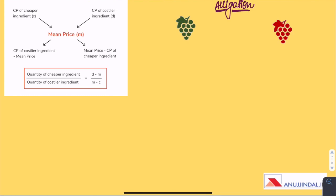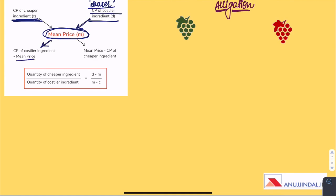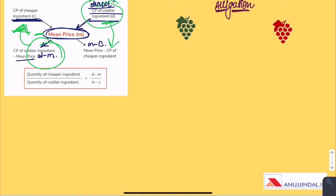Alligation is the rule that enables us to find the ratio in which two or more ingredients at a given price must be mixed to produce a mixture of a desired price. For solving questions related to Mixture and Alligation, we have a formula where the cost price of the cheaper ingredient (C) and cost price of the costlier or dearer ingredient (D) are used, with the mean price (M) in the center. D minus M gives the amount of cheaper ingredient needed, and M minus C gives the amount of dearer ingredient required.